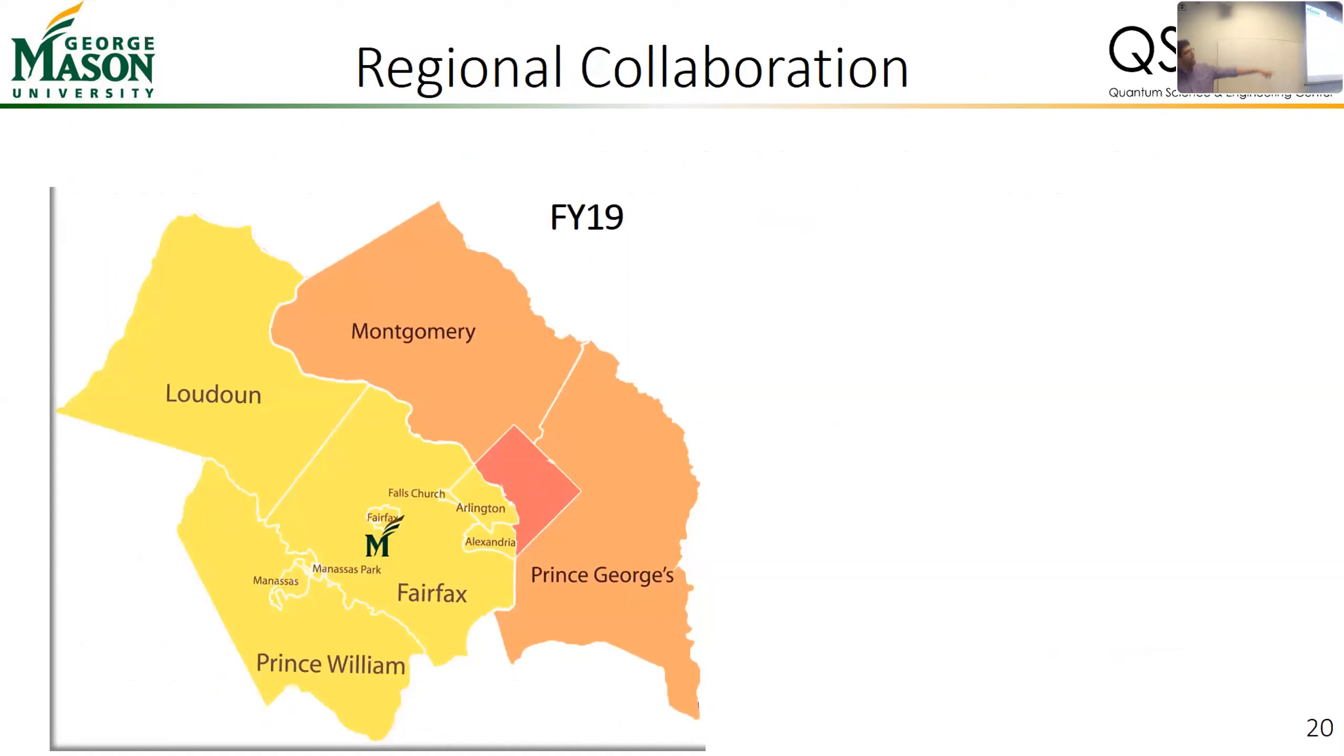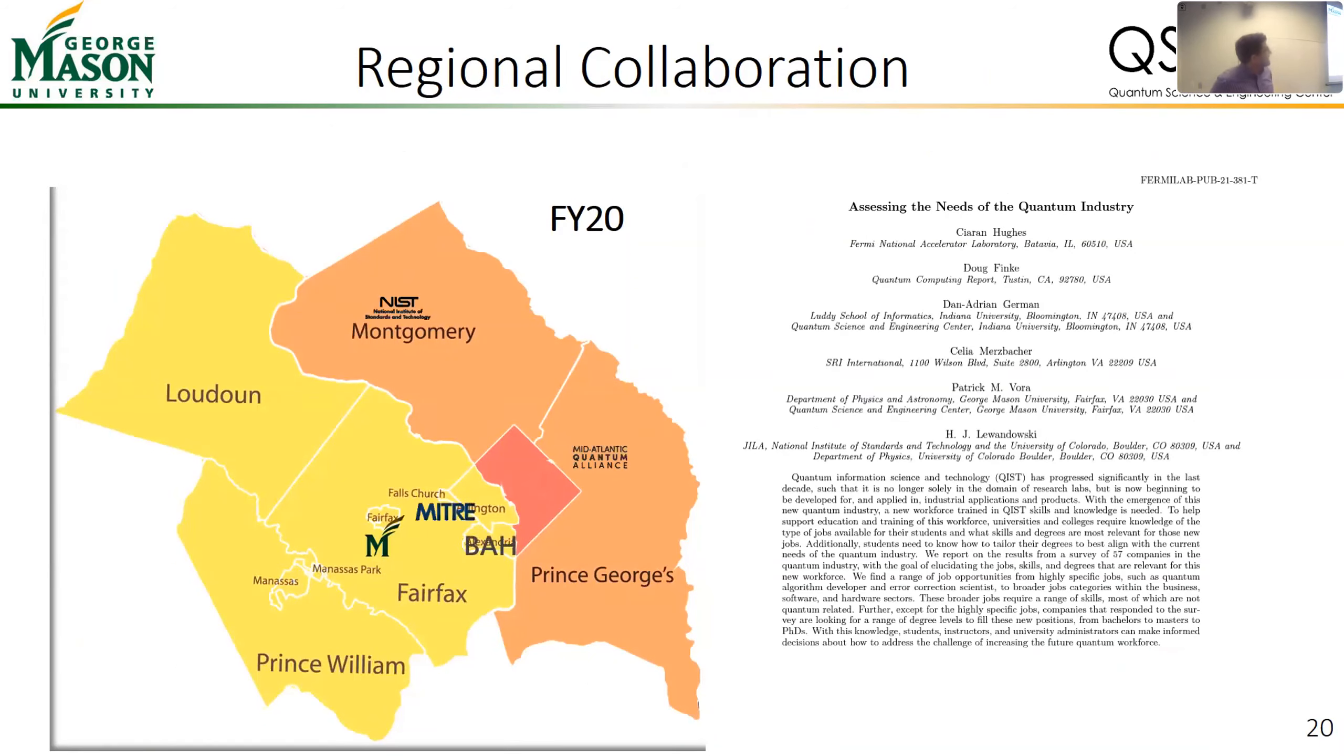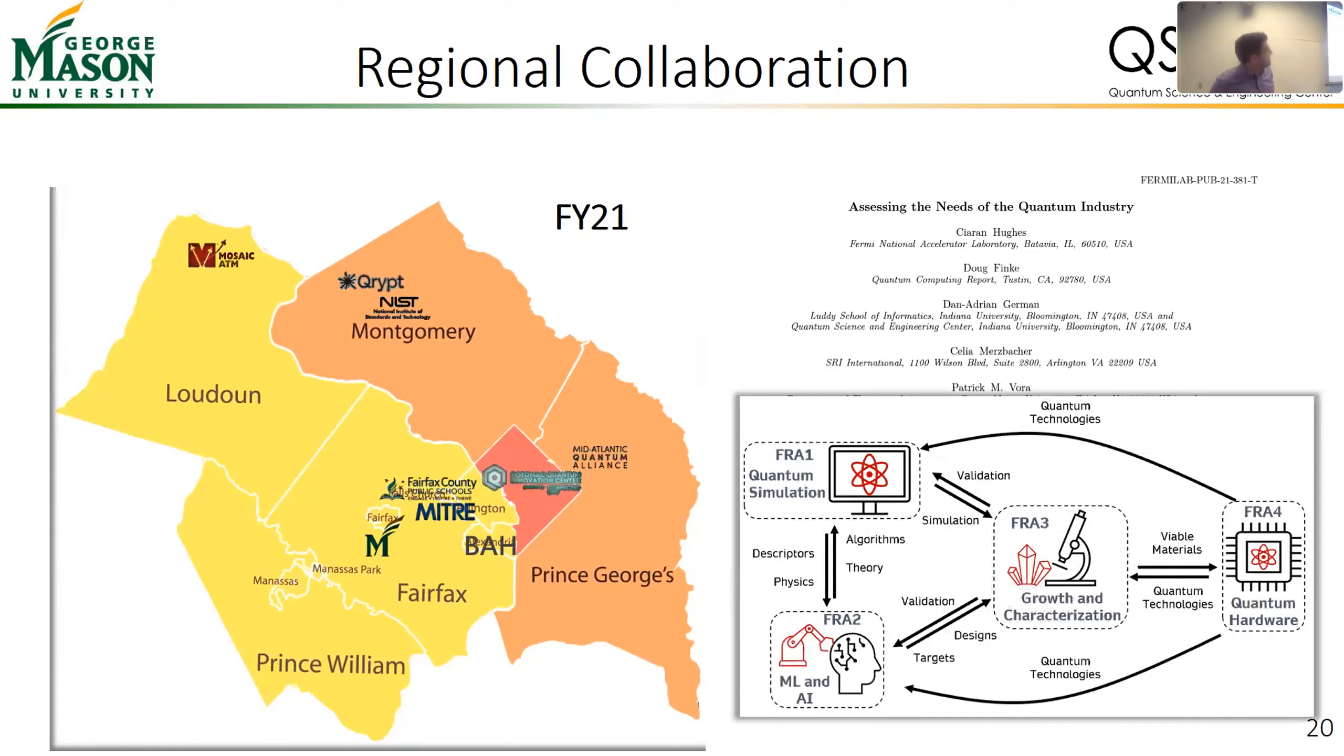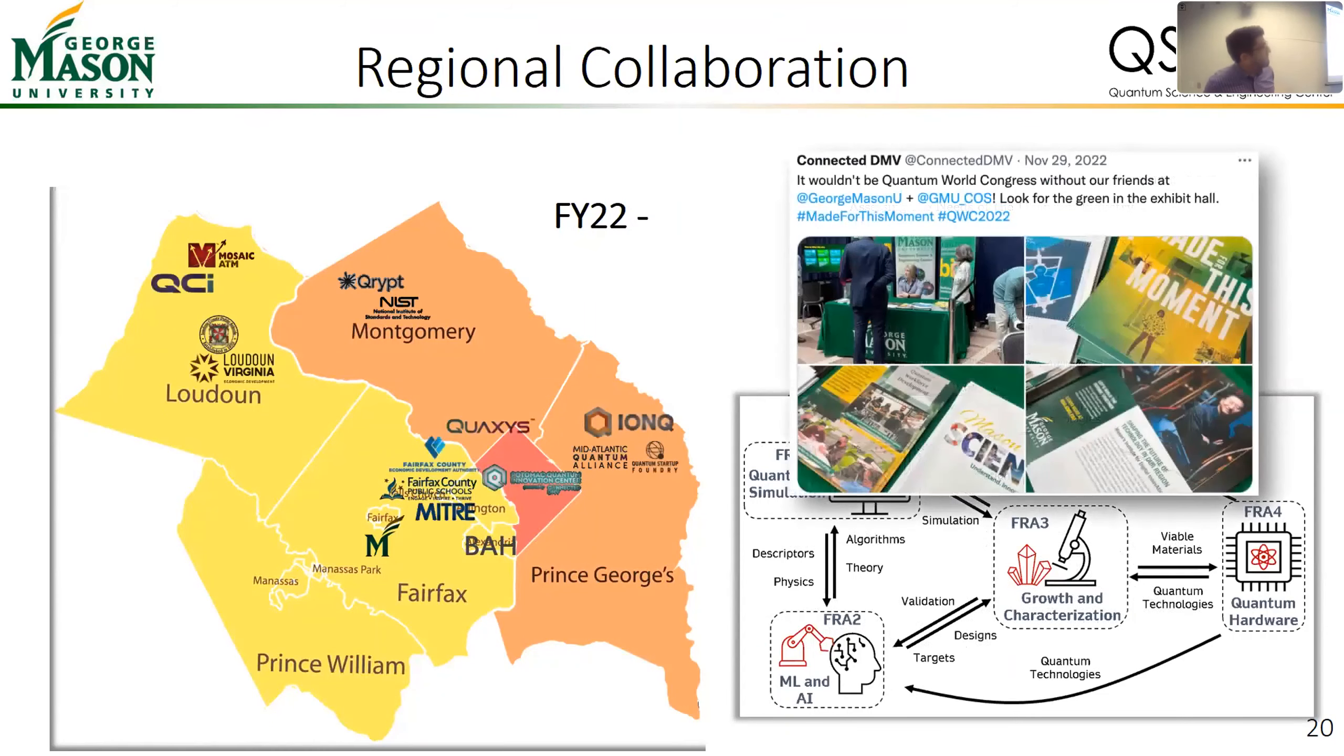We work with our friends in the region. Here we are at Mason, here's our other friends. We write papers with them, we make figures with them, we take pictures with them at things like the Quantum World Congress, one of the world's first cross-sector quantum events that brought together academia, industry, and government from 11 countries. This DC area is a hotbed for this kind of research that you could be doing and the kind of education you can get in this area. It's a great place to be right now.